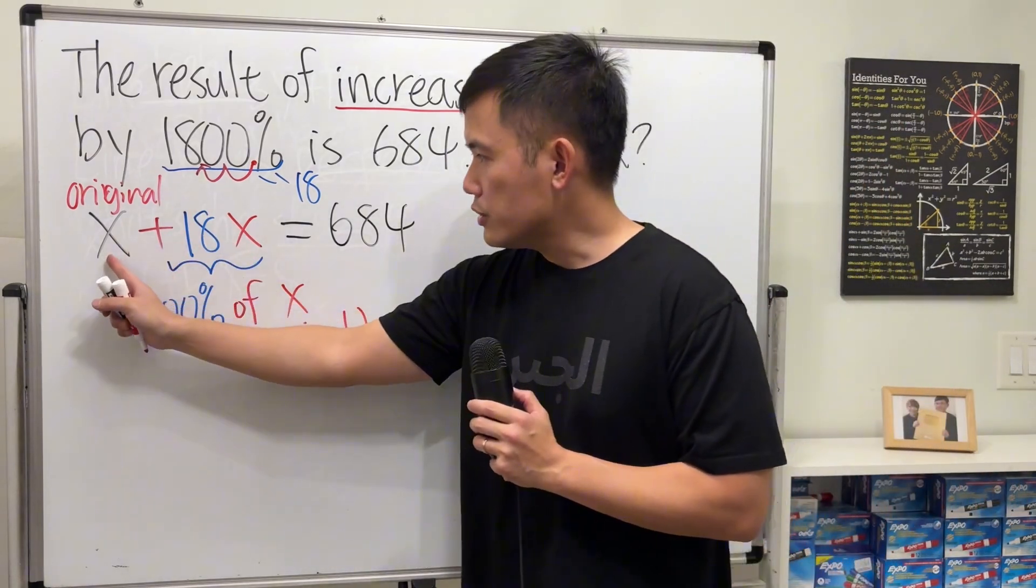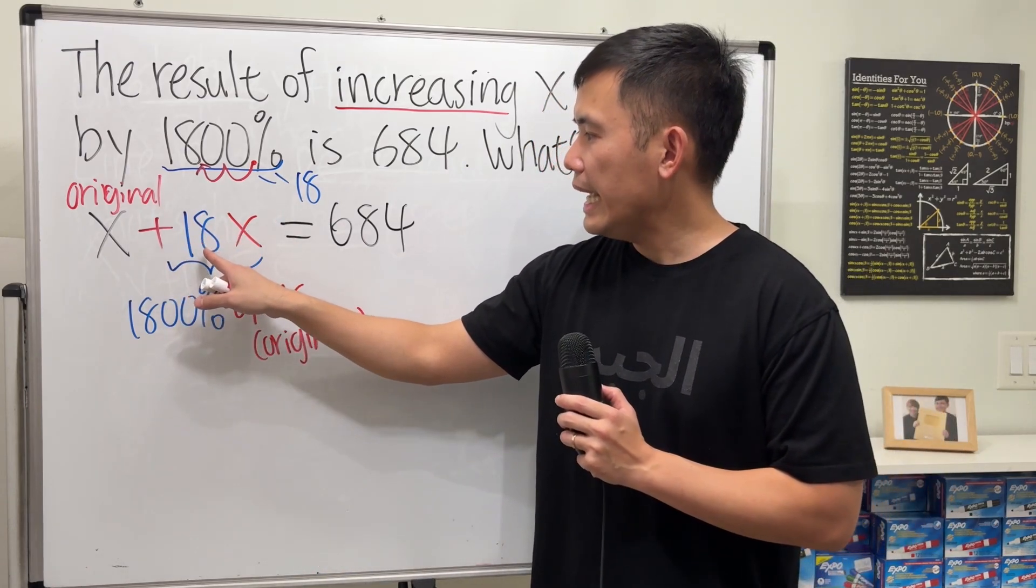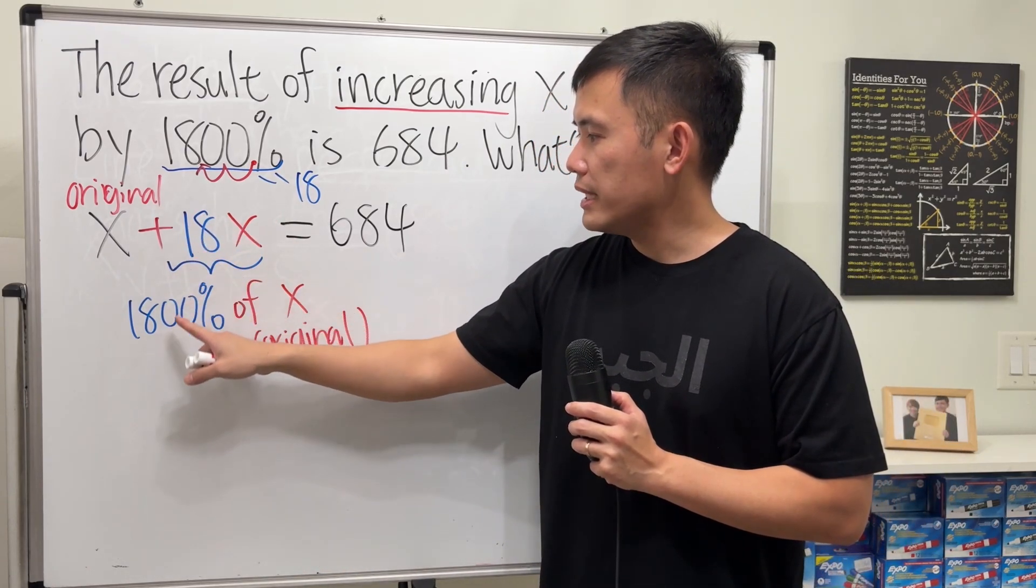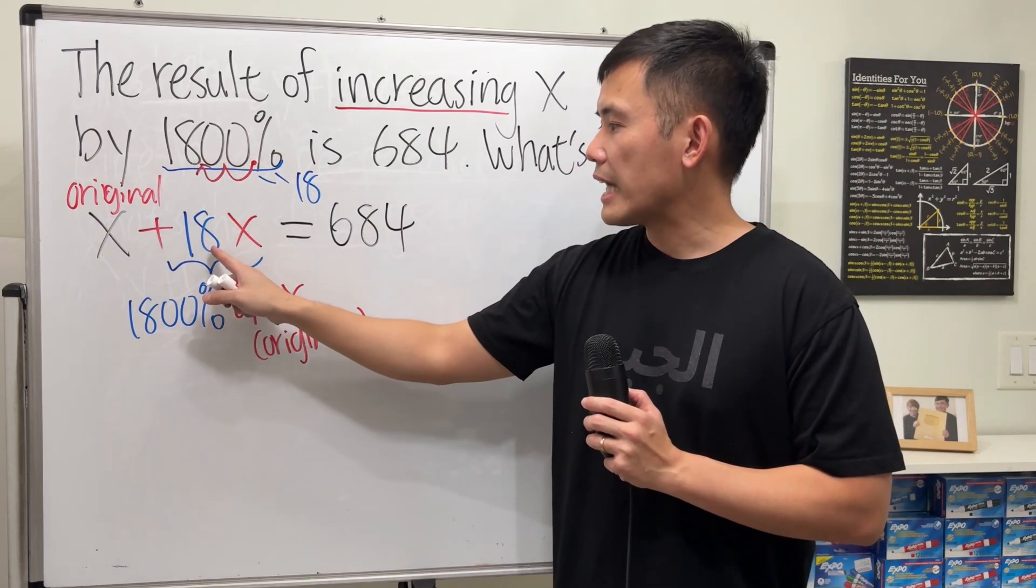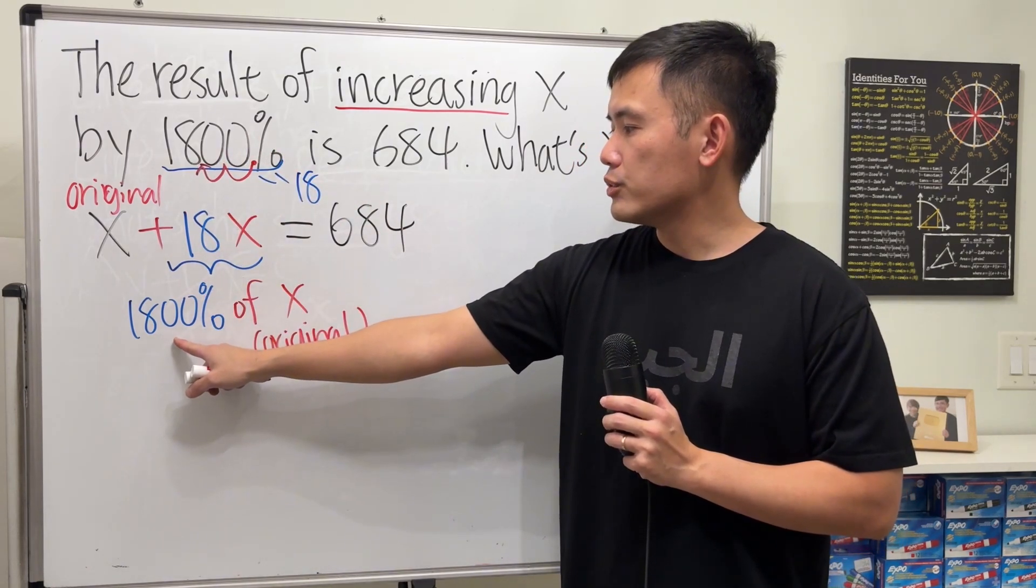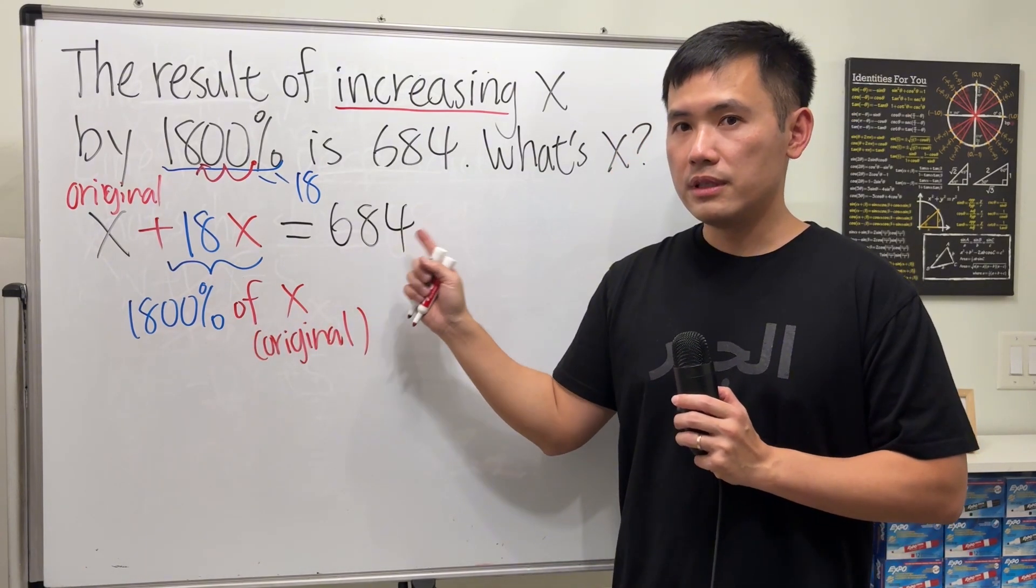Again, original plus how much that you're adding. And this much is 1800%, that's what the 18 is for, because that's the percent as a decimal, times the original amount. 1800% of x. Make that equal 684.